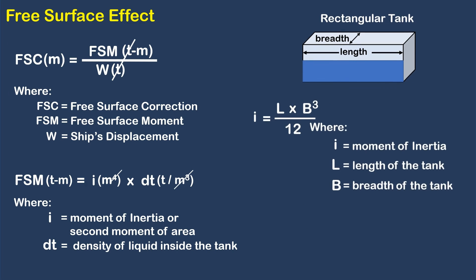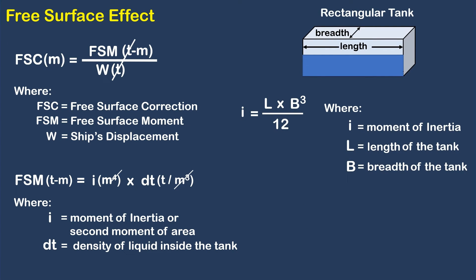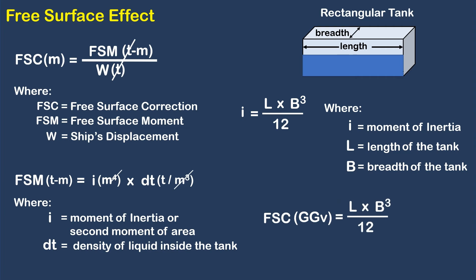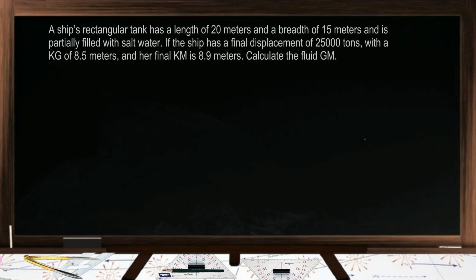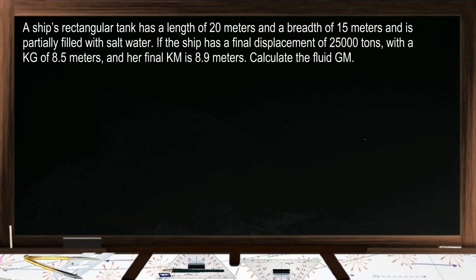Let us simplify the formula for a rectangular shaped tank. The free surface correction GGV equals length times breadth cubed, divided by 12, times displacement, and the quotient will be multiplied by the density of liquid inside the tank. Consider this problem: a ship's rectangular tank has a length of 20 meters and a breadth of 15 meters, and is partially filled with salt water.